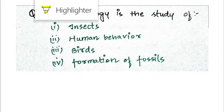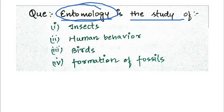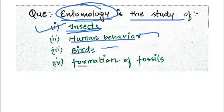The next question is, entomology is the study of what? Entomology is a branch of biology, especially zoology, which deals with the study of insects. Not human behavior, not birds, not fossils. The answer is insects, that is entomology.